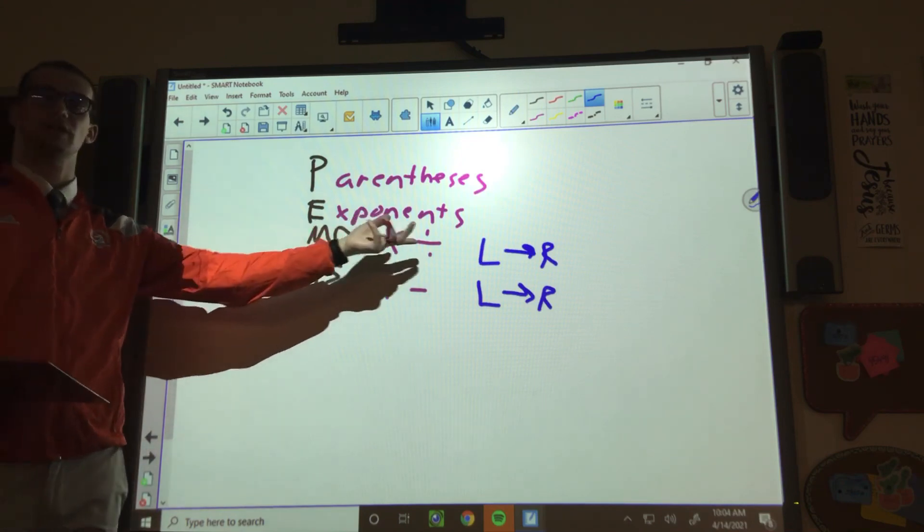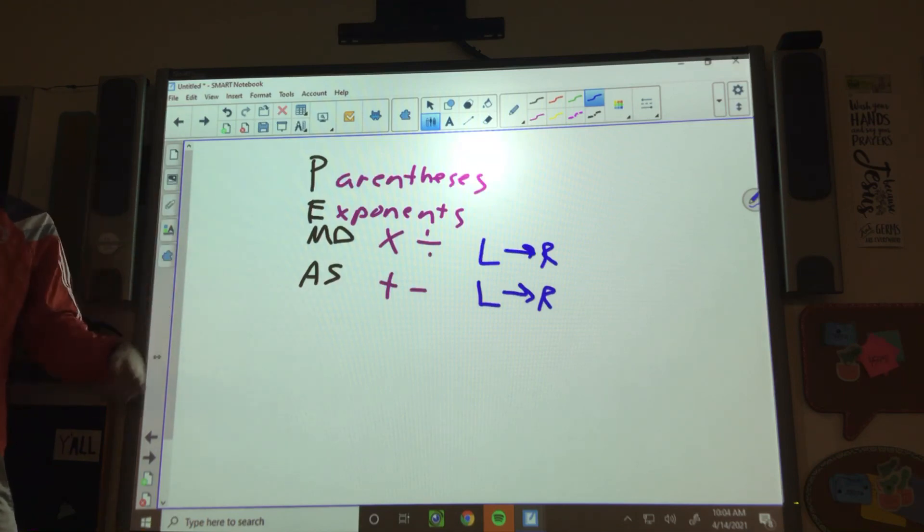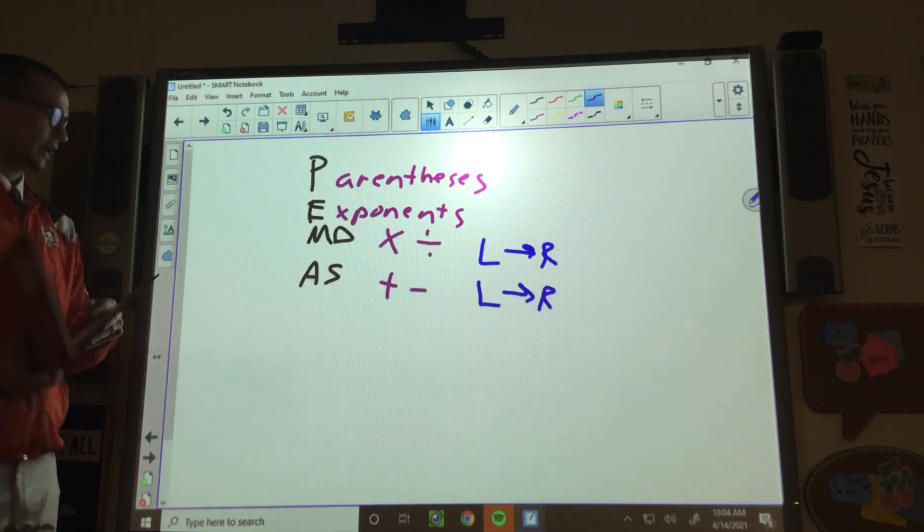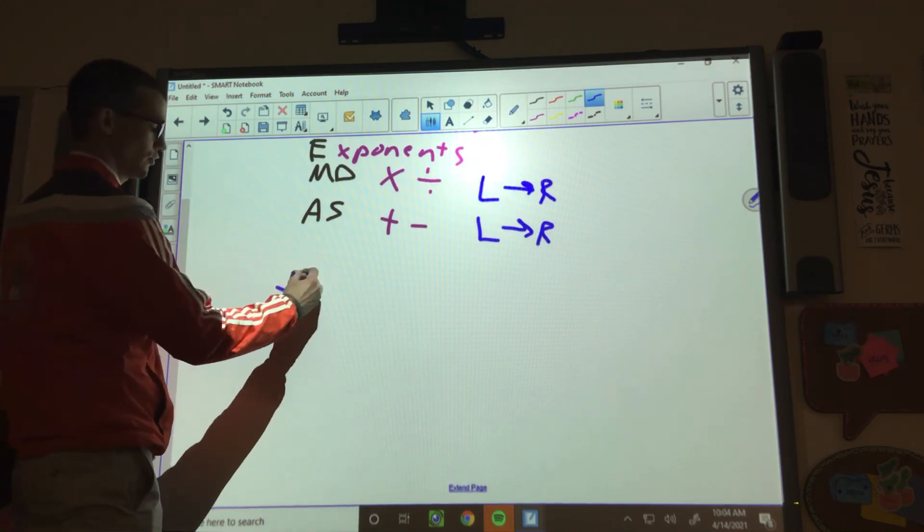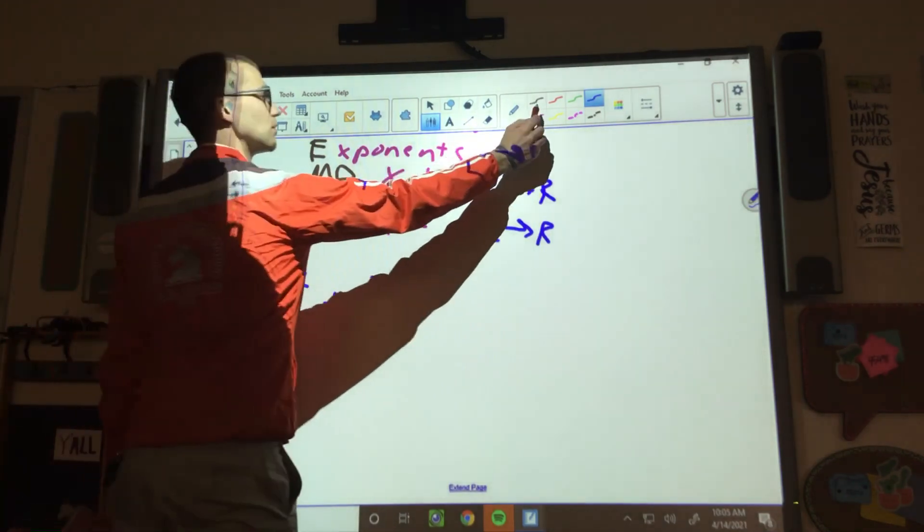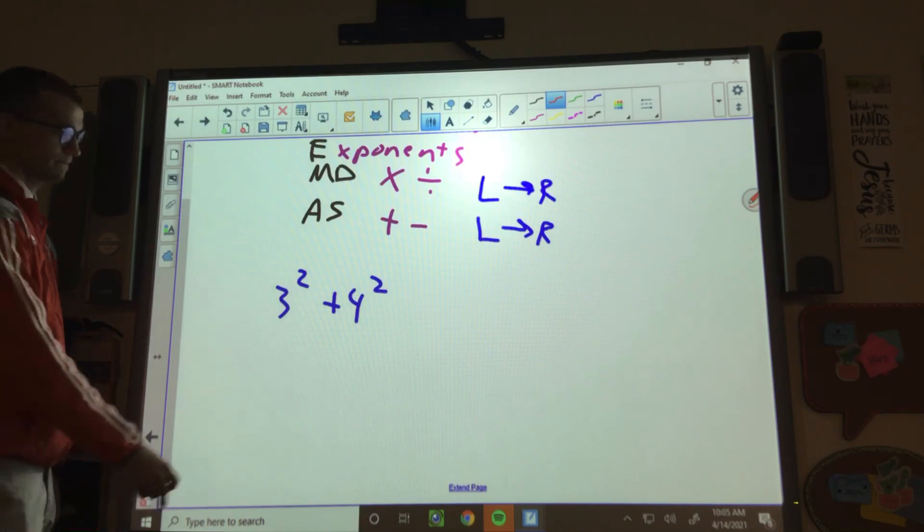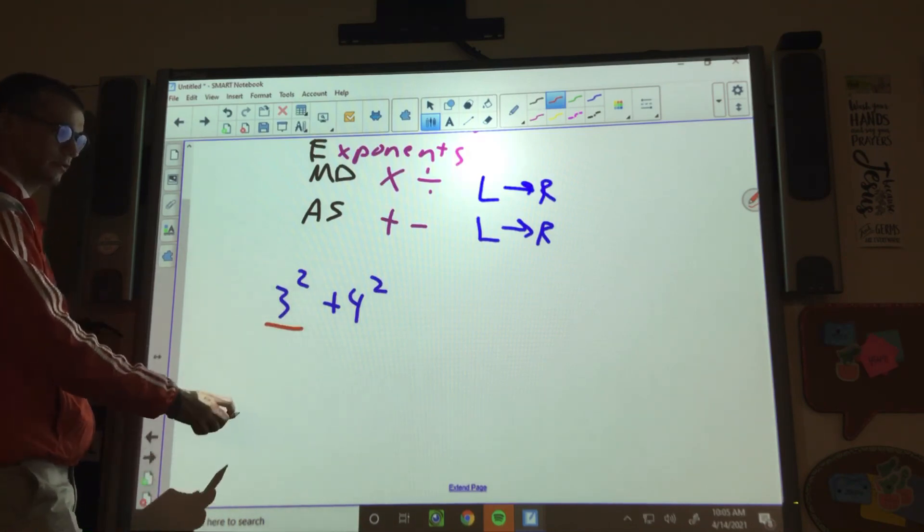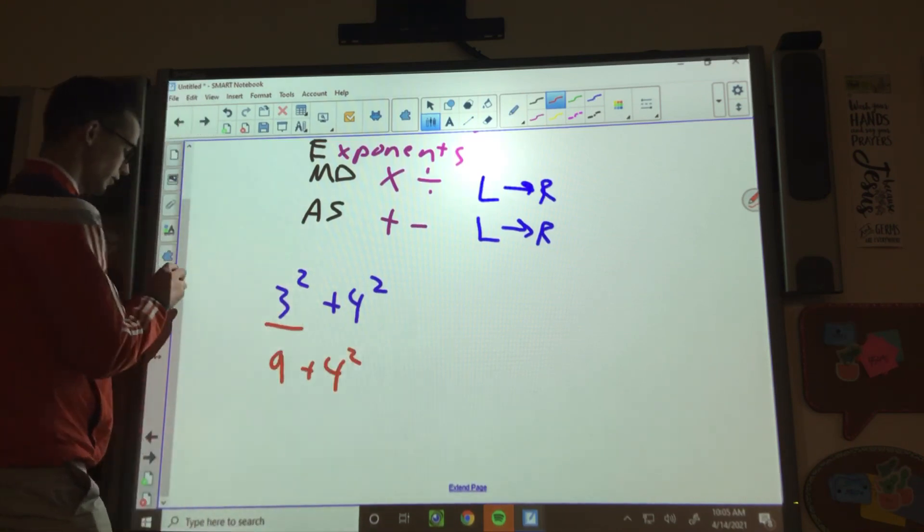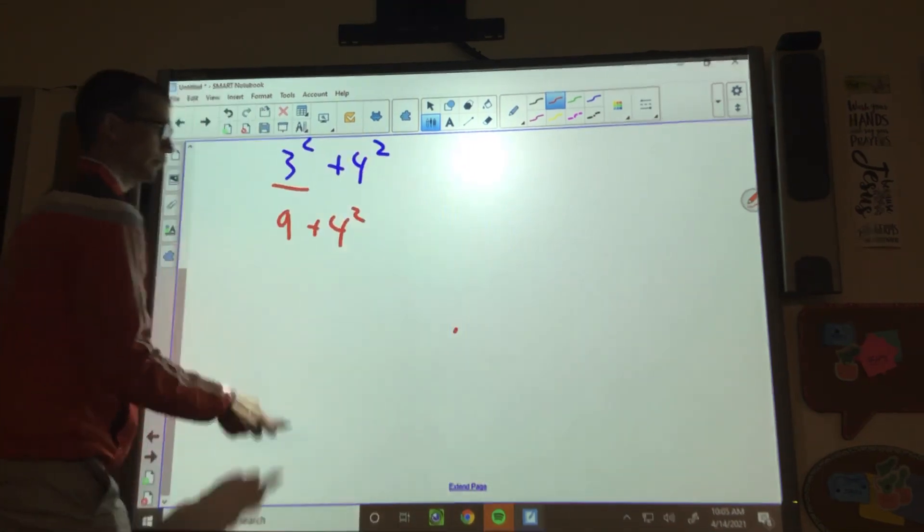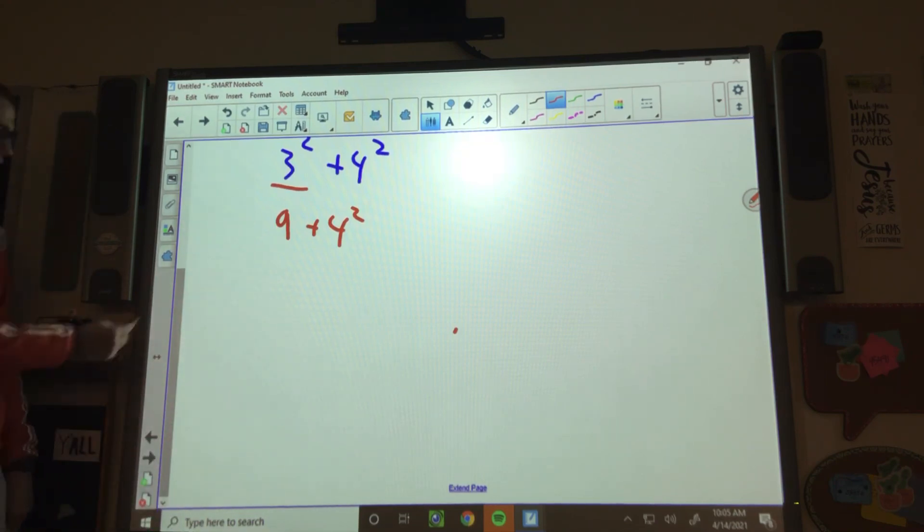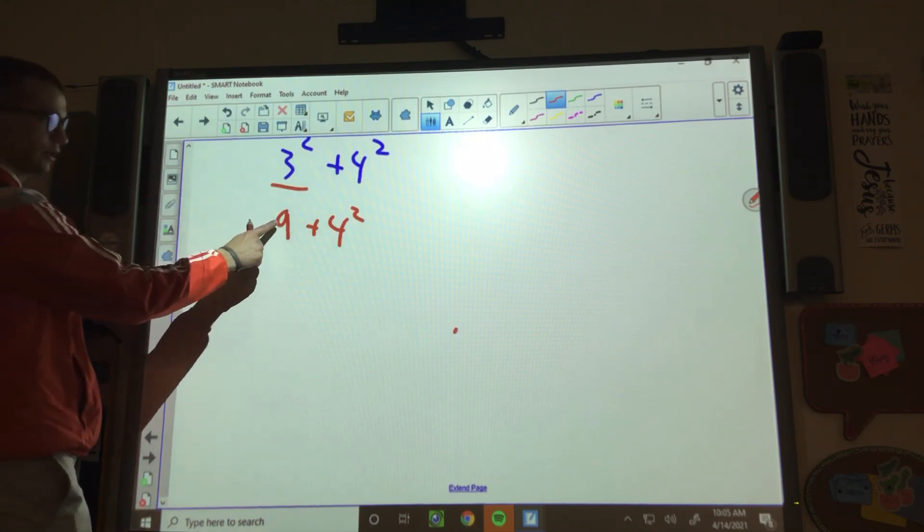Example. So if I have 3 squared plus 4 squared, what is the first thing I got to do? Yep. So you have to do your exponents. 3 squared is? It's 9. So now I have 9 plus 4 squared. What do I do? 4 squared is 16. Why do I do 4 squared first? Because it's going to be weird that I'll do it first. No, it's not weird. It's because... Left to right. Nope. If I do left to right, then I would do 9 plus 4 and then square.